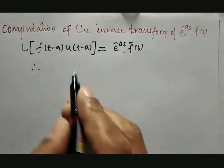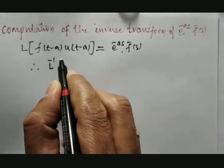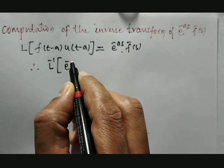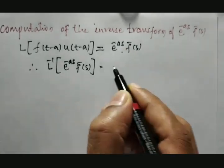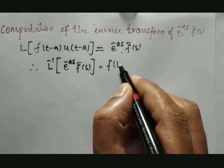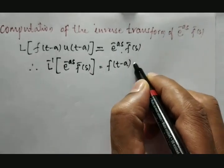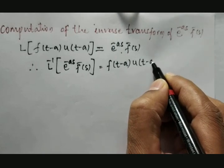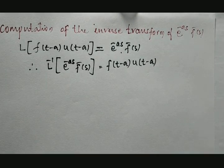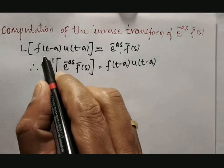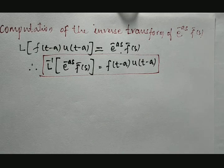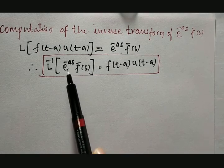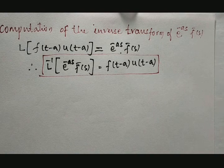Simply moving L to the other side, the inverse Laplace of e raised to minus as into f̄(s) is equal to f(t minus a) into u(t minus a). This indicates the way to obtain the inverse Laplace transformation of a function where f̄(s) is associated with e raised to minus as.